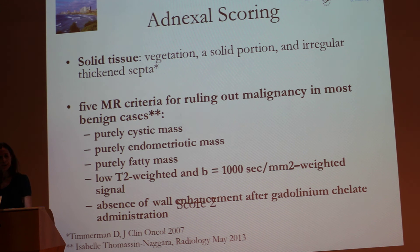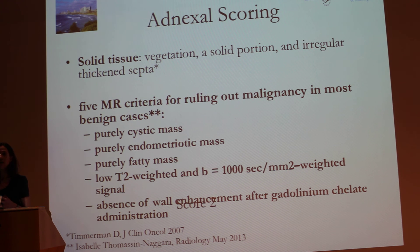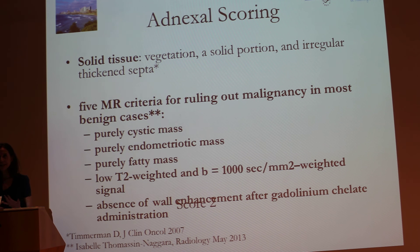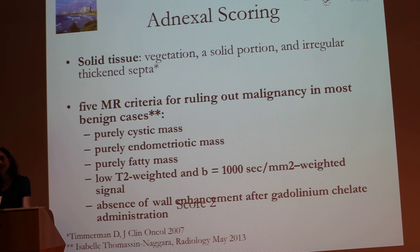The first key element is what we call 'solid tissue,' which summarizes the vegetations, solid portions, and irregular thick septa — all solid components are captured under this term. Five MRI criteria for ruling out malignancy in benign cases are: purely cystic mass, purely endometriotic mass, purely fatty mass, low T2 and low diffusion signal. When these are present, the mass can be considered benign — score 2. After perfusion, the absence of enhancement after gadolinium confirms this.